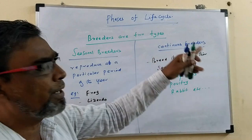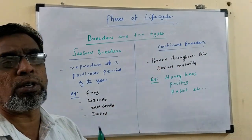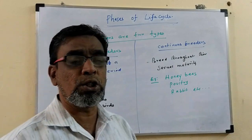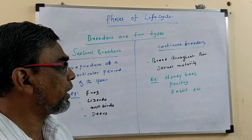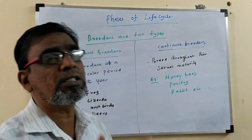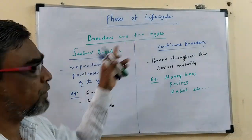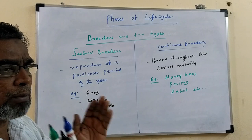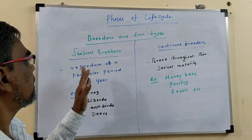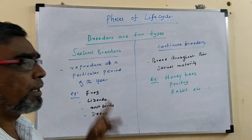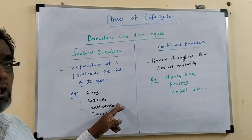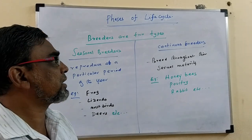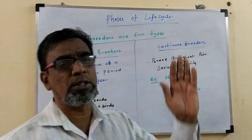Continuous breeders breed throughout their sexual maturity. For example, honeybees, poultry, and rabbits are called continuous breeders. So once again, seasonal breeders reproduce at a particular period of the year — examples are frogs, lizards, and most birds — whereas continuous breeders breed throughout their sexual maturity.